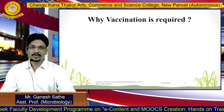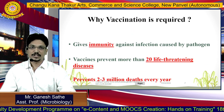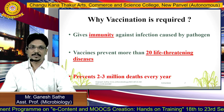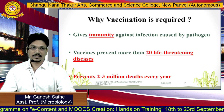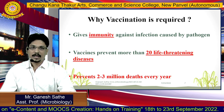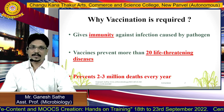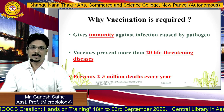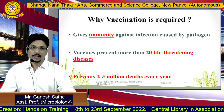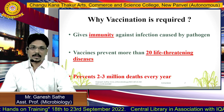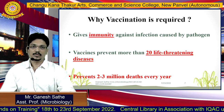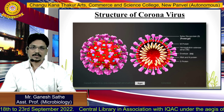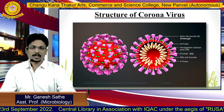What is meant by vaccine and why is vaccination required? When we get vaccinated, we get immunity against different types of infection. At the global level, there are 20 different types of life-threatening diseases which will be prevented with the help of vaccines. Every year, approximately 2 to 3 million deaths per year are going to be prevented.